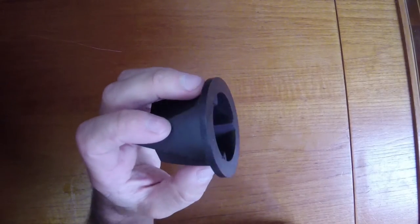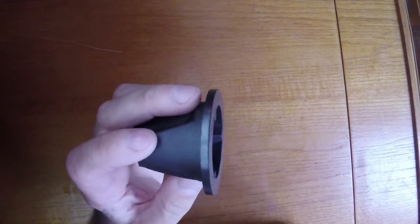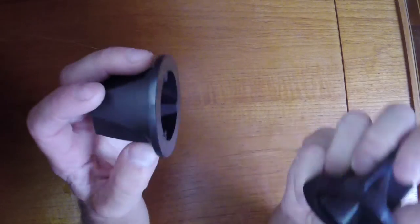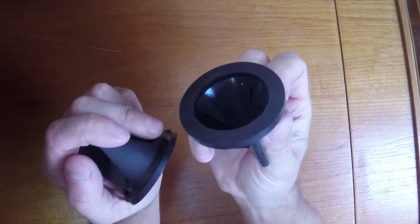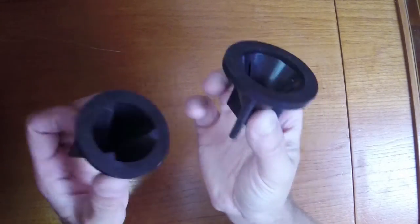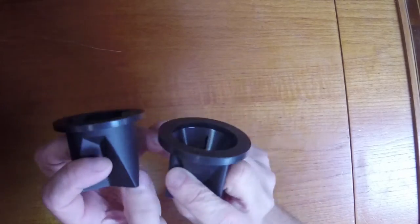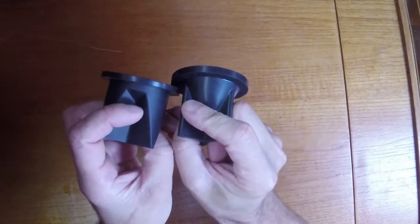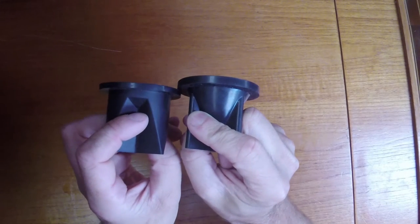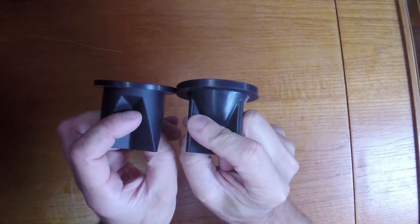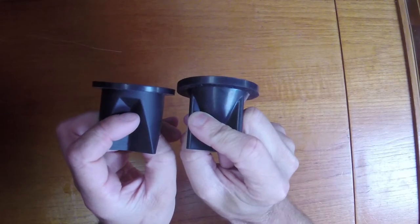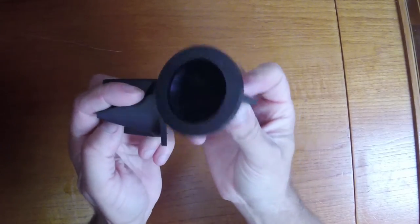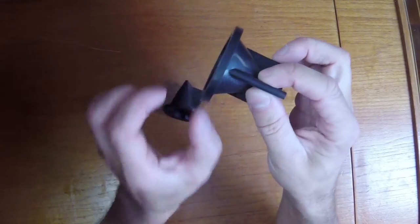I suspect they're interchangeable the other way around though. A Jabsco valve with a thicker flange will fit in a TMC toilet where a thinner flange is okay. You can see there, the Jabsco one is a magnitude thicker in this section here.